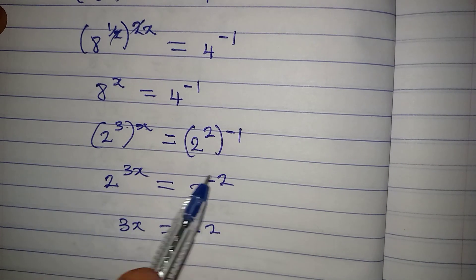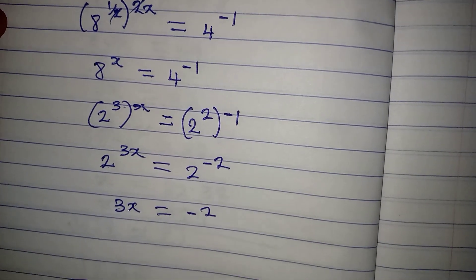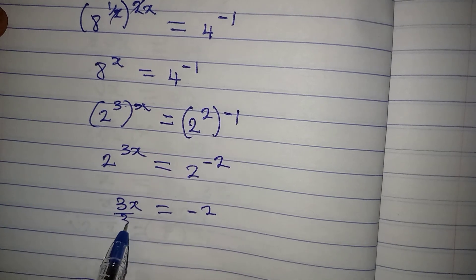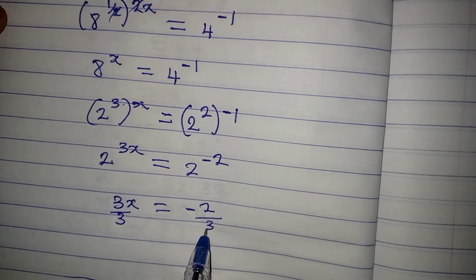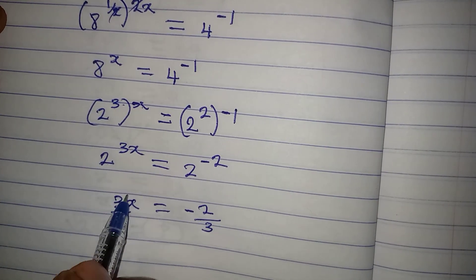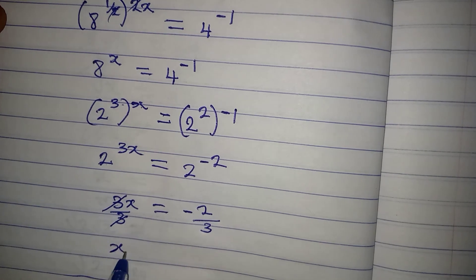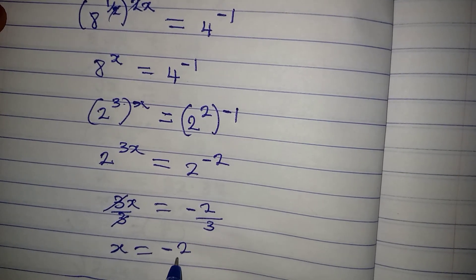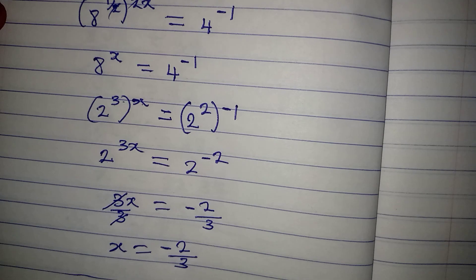I am working with the powers and not the bases. From here, we divide by 3 and divide this by 3. This will go with this. And x will be equal to minus 2 over 3.